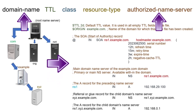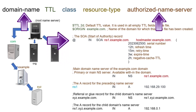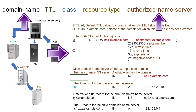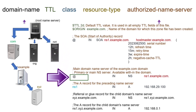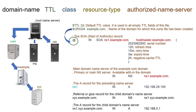Therefore, if we keep this field empty, DNS picks the start of authority record's name field's value as the default value for this field. In the start of authority record, administrators usually use a single at sign in the name field. DNS replaces the at sign with the value of the origin directive.